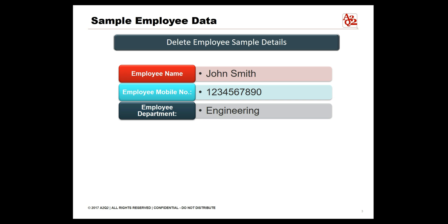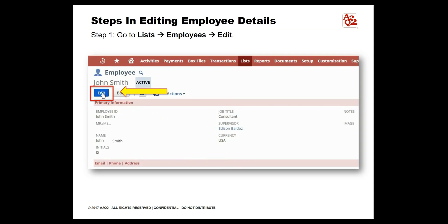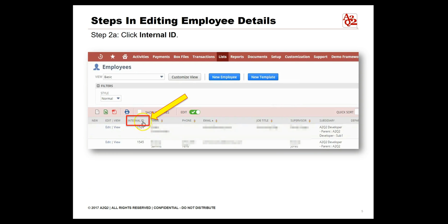For this demo we will use employee data for John Smith. Once logged into NetSuite, navigate to the employees page by clicking List > Employees > Edit. Click the internal ID column to sort the employees according to their ID number.